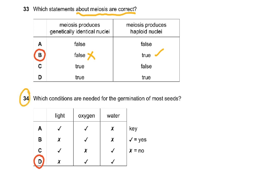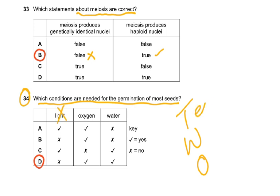Question 34: which conditions are needed for germination of most seeds? A simple mnemonic: temperature, water, and oxygen. Light is not needed. So the correct answer includes oxygen and water but no light — it is temperature, water and oxygen, not air. Please remember: adequate temperature, enough water, and oxygen.